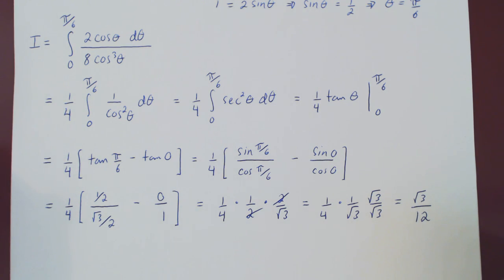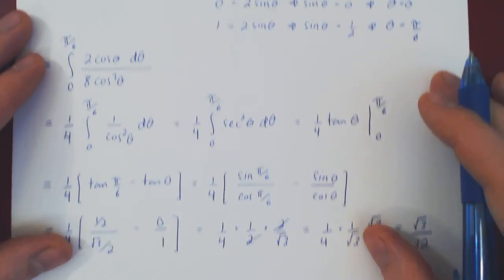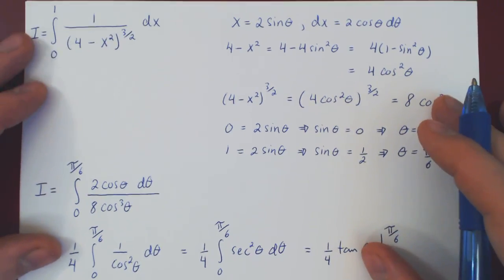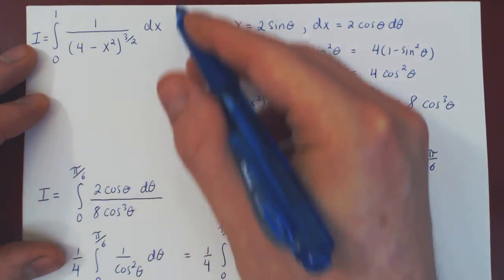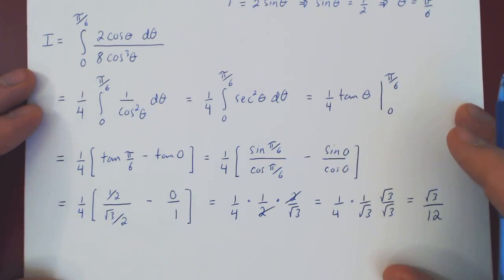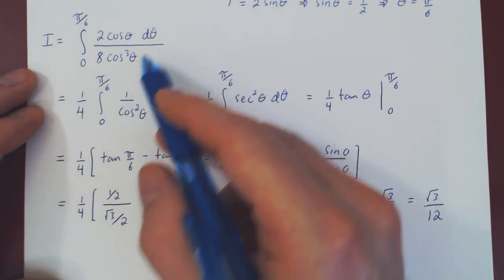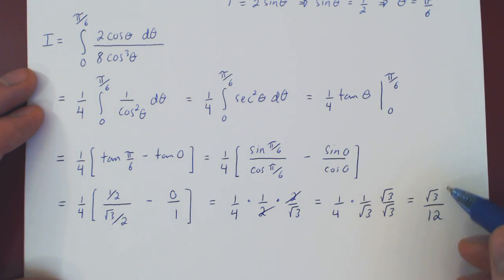Now, again looking at the original integral, we can say that this integral is the same as this trigonometric integral from our trig substitution, and the final answer is root of 3 over 12.